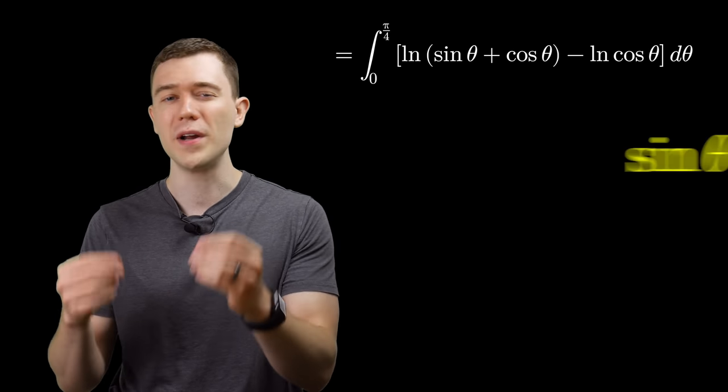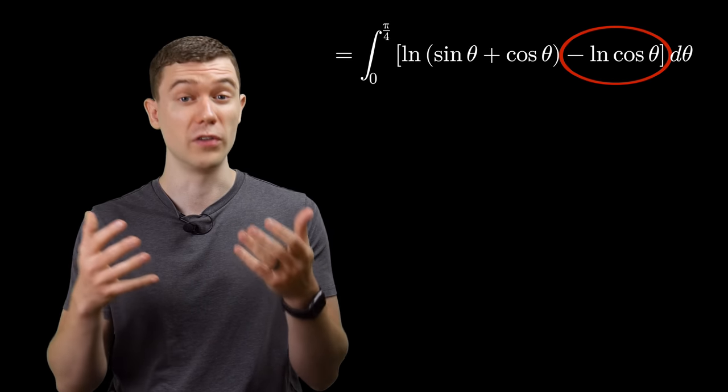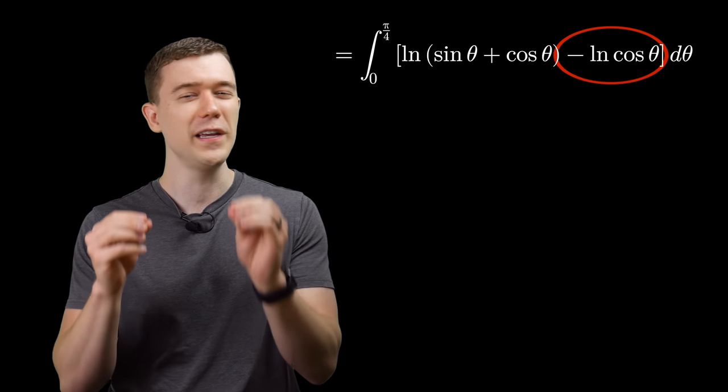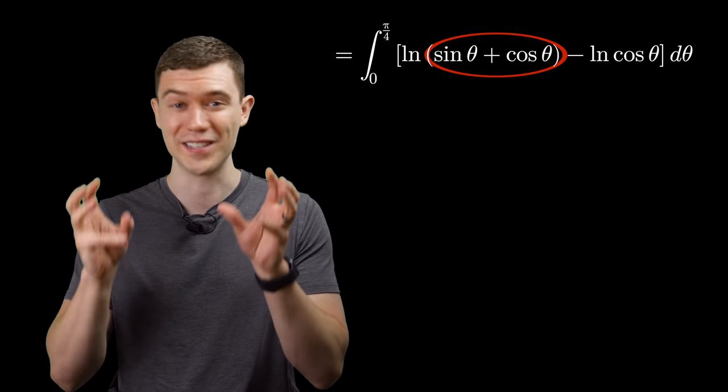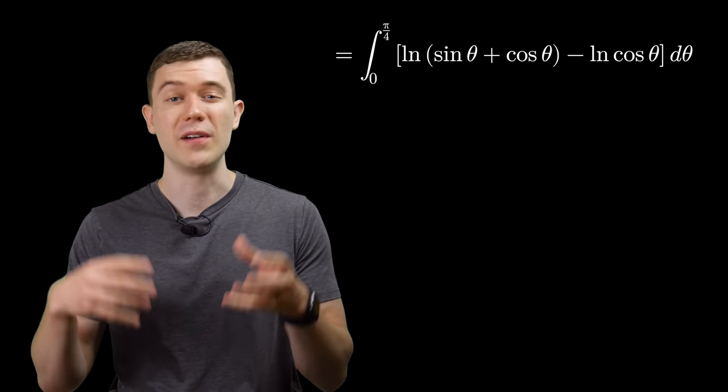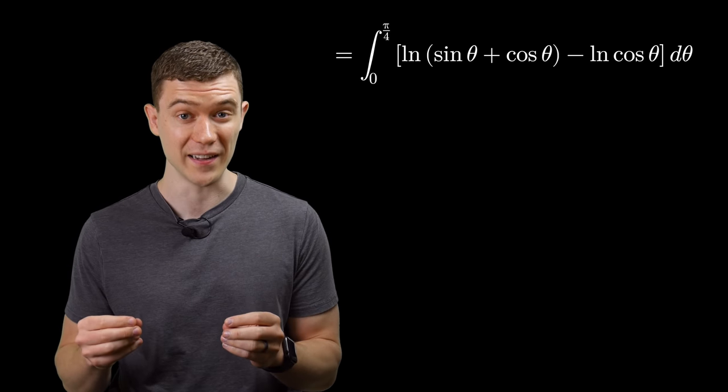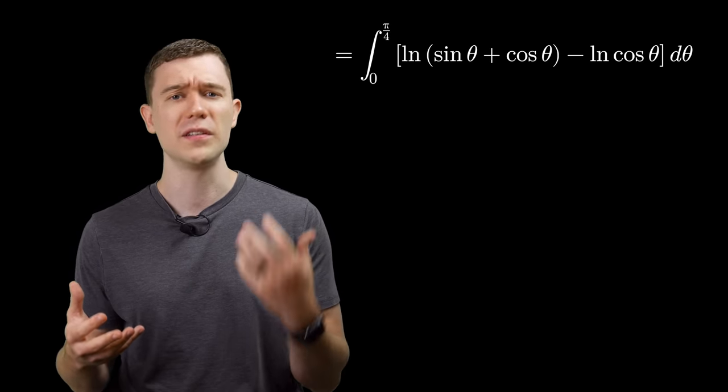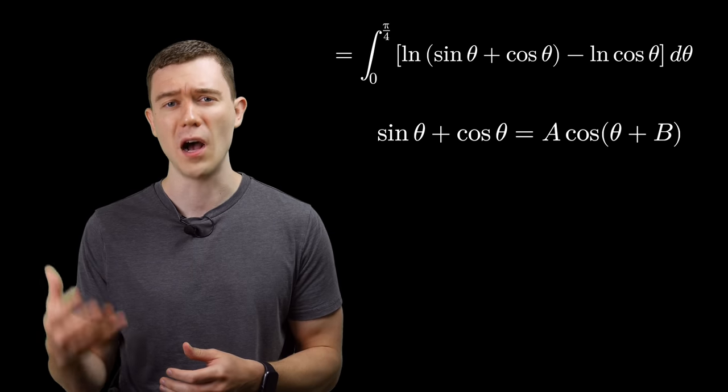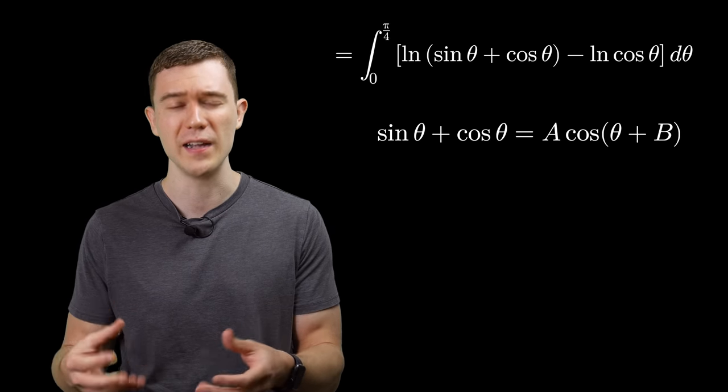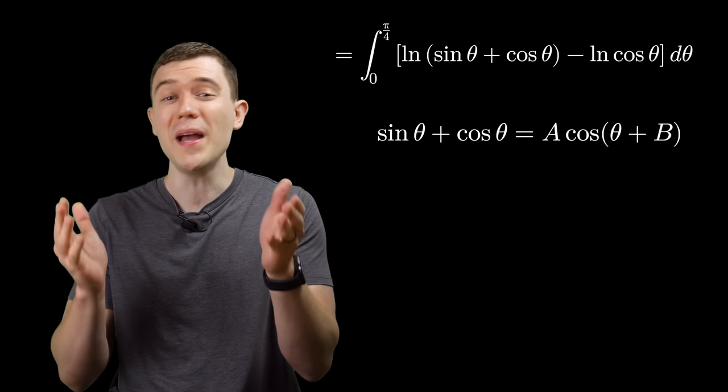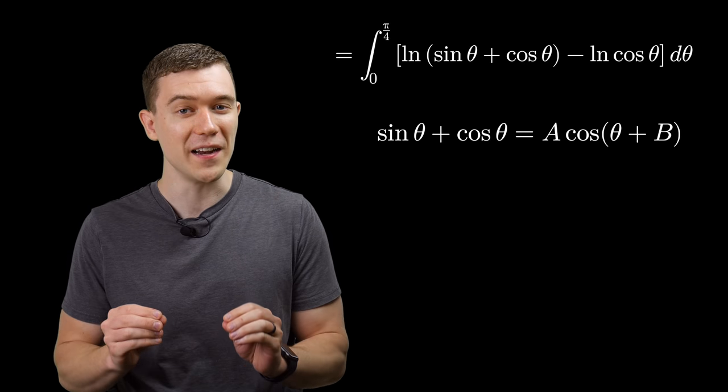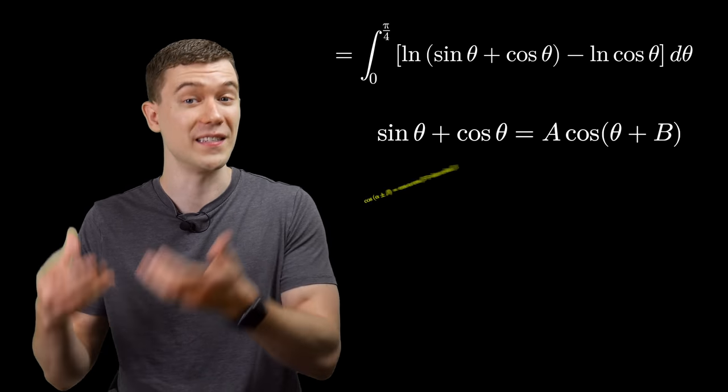Notice that we're already subtracting a log of cosine. Maybe we can rewrite sine plus cosine in terms of just cosine. Essentially, we're going to derive a less well-known trig identity. Let's just say sine plus cosine equals some constant times cosine of theta plus some other constant. Luckily, we do have the very well-known trig identities for cosine of a sum or a difference.